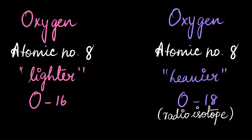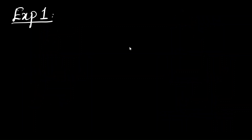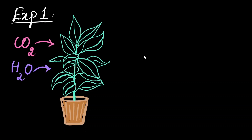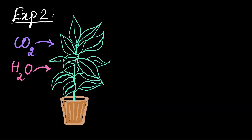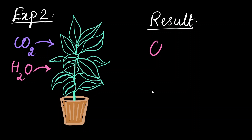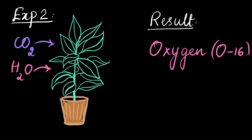In the first experiment, a plant was supplied with carbon dioxide containing the lighter oxygen (O-16) and water containing the heavier oxygen (O-18). The result was that the oxygen evolved was made up of the heavier version. In the repeated experiment, the oxygen in the compounds was switched — carbon dioxide had the heavier version and water had the lighter version — and the oxygen evolved was the lighter version. The overall observation is that whatever type of oxygen was present in the water molecule was reflected in the oxygen evolved. This proved that the oxygen released in photosynthesis comes from water, not from carbon dioxide.